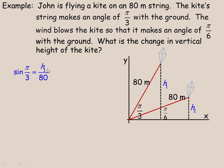And we want to solve for H1 here. So what I would do to solve for H1 is multiply both sides by 80. If I multiply both sides by 80, like that, the 80's divide out and we have H1 isolated on the right. So H1 would equal 80 sine π/3.